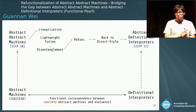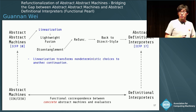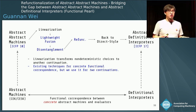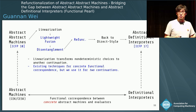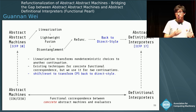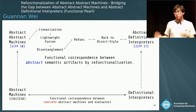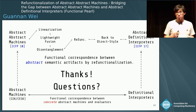To conclude: linearization makes non-deterministic choices explicit as a meta continuation. Lightweight fusion, disentanglement, and refunctionalization are existing techniques for constructing concrete functional correspondence, here applied to the case of two continuations. Finally, we transform back to direct style using delimited control operators. The reverse direction is also possible and briefly discussed in the paper. We have shown a functional correspondence between abstract machines and abstract definitional interpreters.